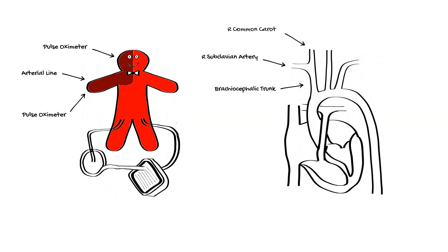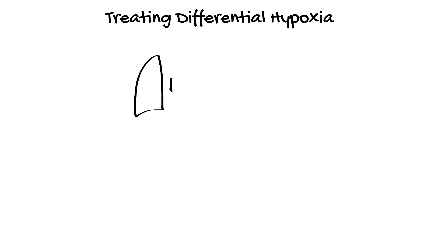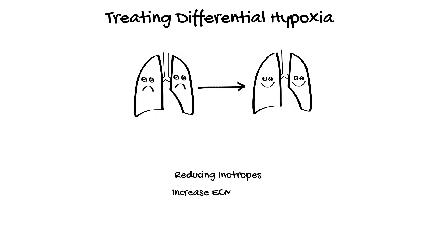When differential hypoxia occurs, the focus should be on trying to improve the native lung function to increase oxygenation of the native cardiac output. Other options include reducing inotropy to decrease the native cardiac output, increasing ECMO flow to move the mixing point proximally, or reconfiguring to return sites other than the femoral vessels.